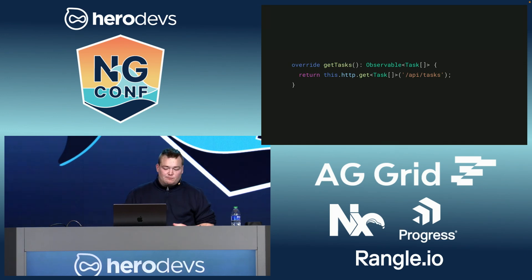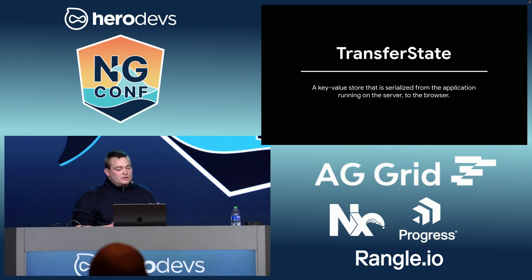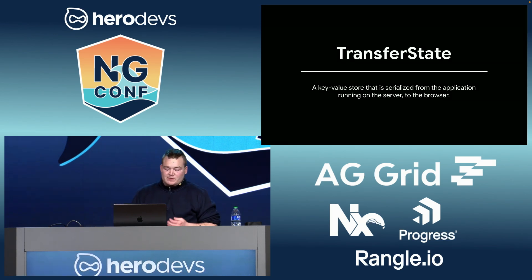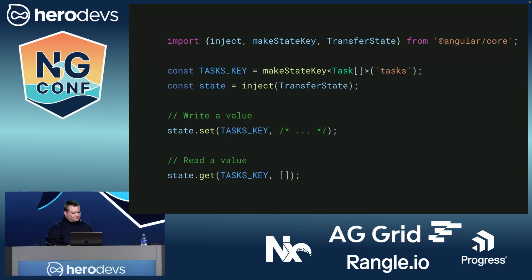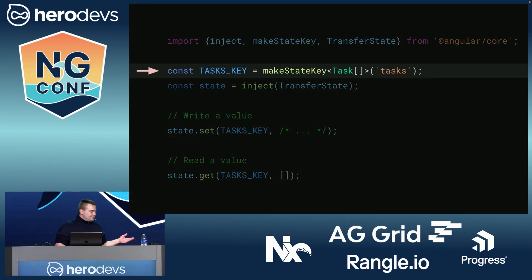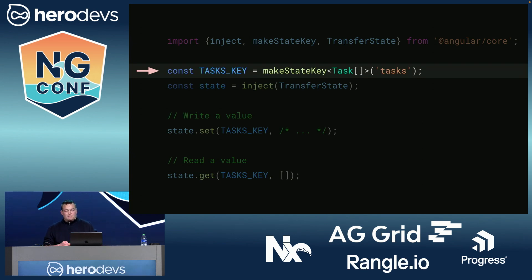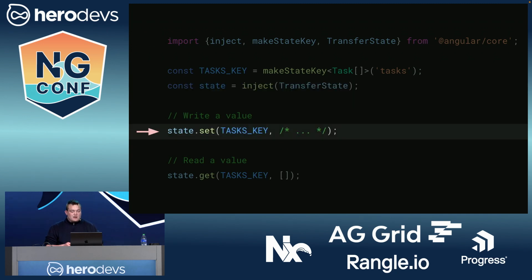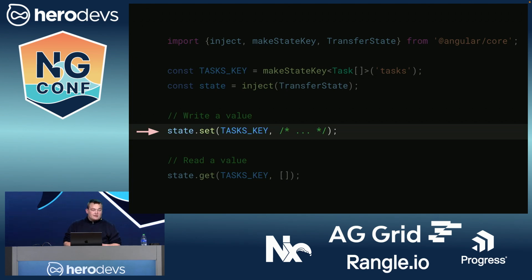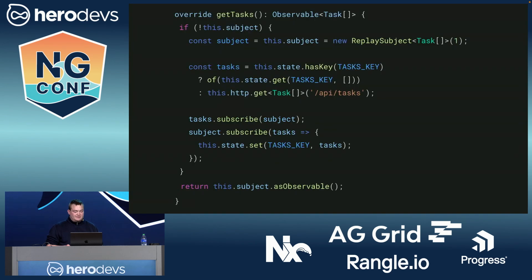Transfer state is a key-value store that is serialized from the server to the browser. It makes it fairly straightforward to address these sorts of state and data mismatches. The API is pretty simple. First, we create a state key. This couples the key 'tasks' to the type of our data being stored — an array of tasks. We inject the transfer state service, and then finally we read and write values. Angular will take care of all the serialization in the background to the browser for us.